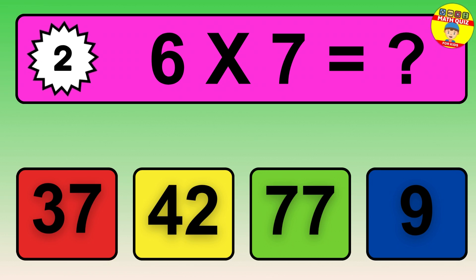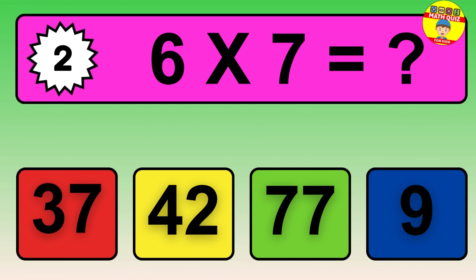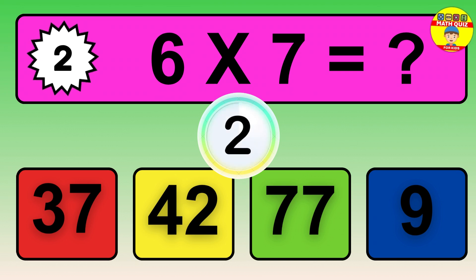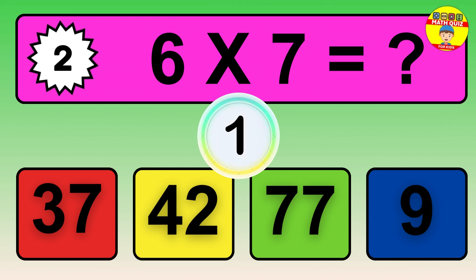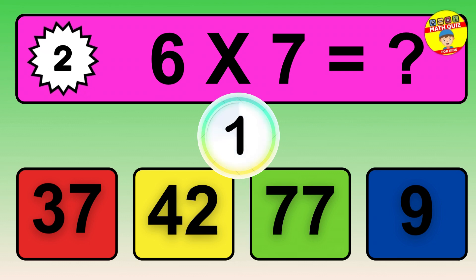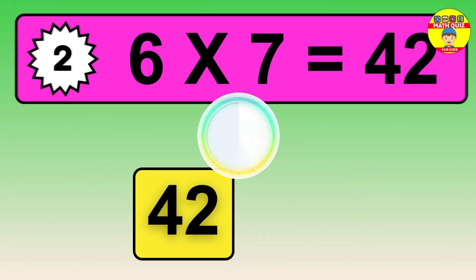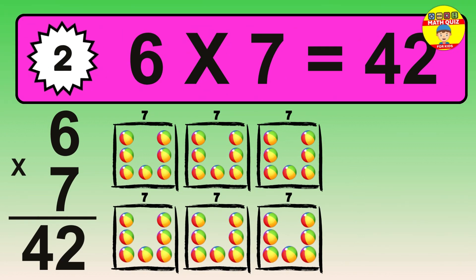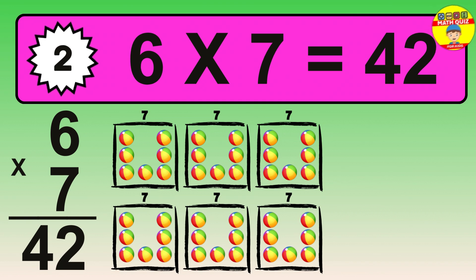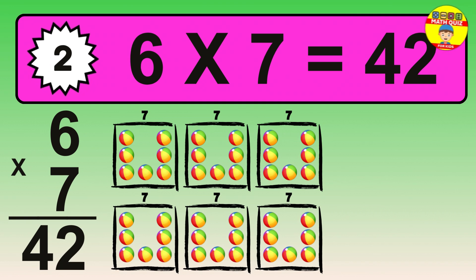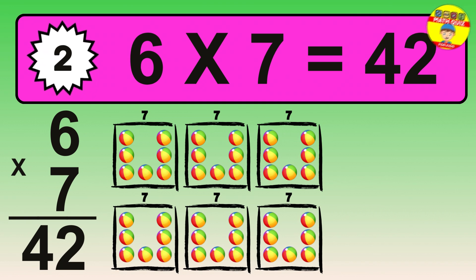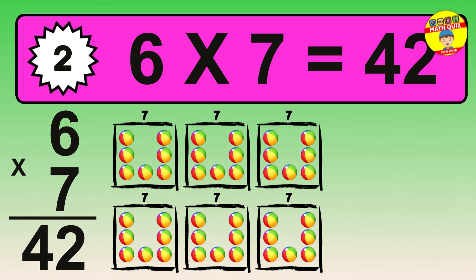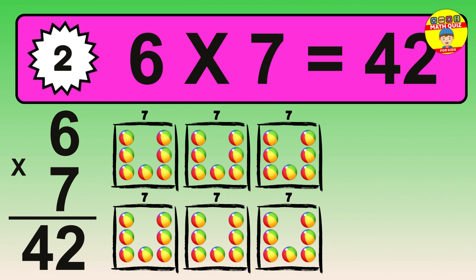Question 2. 6 times 7 equals what? The answer is 6 times 7 is 42. To calculate, we have 6 groups with 7 balls each one. So, how many balls do we have? 42 balls.